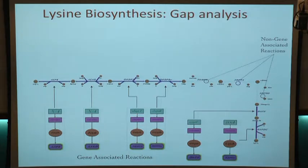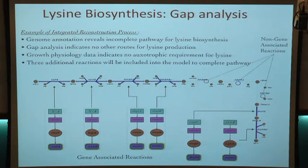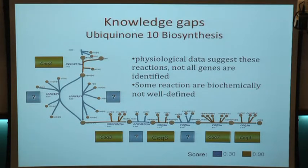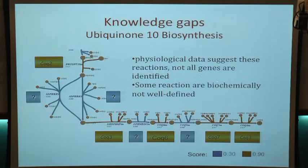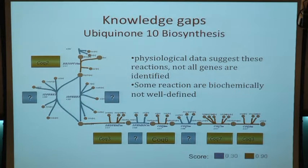The earlier question about getting into unknown aspects of metabolism is very relevant here. You'd like to take unknown proteins, run them through assays, and try to understand what the enzymes might be. You can look at different kinds of knowledge gaps: based on physiologic evidence you know the function exists but don't know all the genes, and some are not biochemically well-defined. You come up with different confidence scores — things that are very definitively there, versus those that are more uncertain.